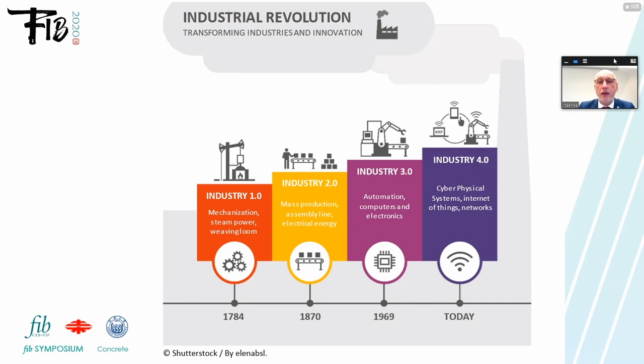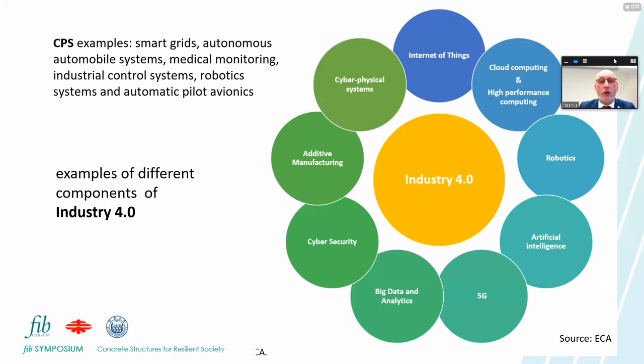Cyber-physical systems are very crucial in Industry 4.0. Examples include smart grids, autonomous automobile systems, medical monitoring, industrial control systems, robotic systems, and automatic pilot in avionics. Other aspects include cloud computing, robotics, 5G, big data and analytics, additive manufacturing, and so on.